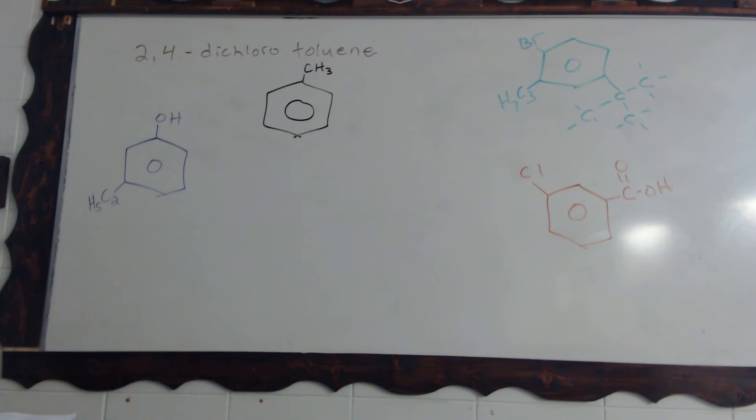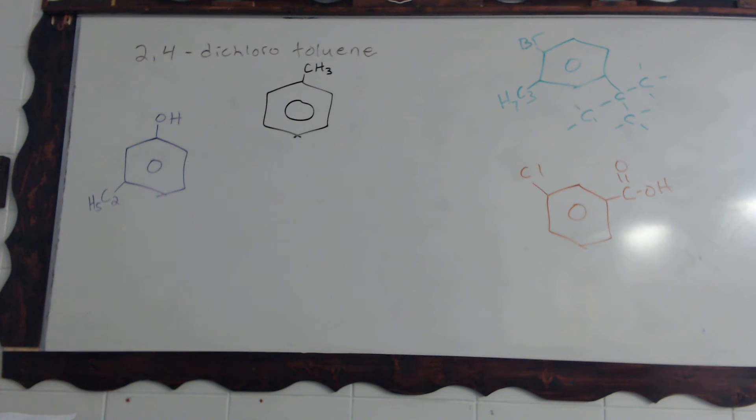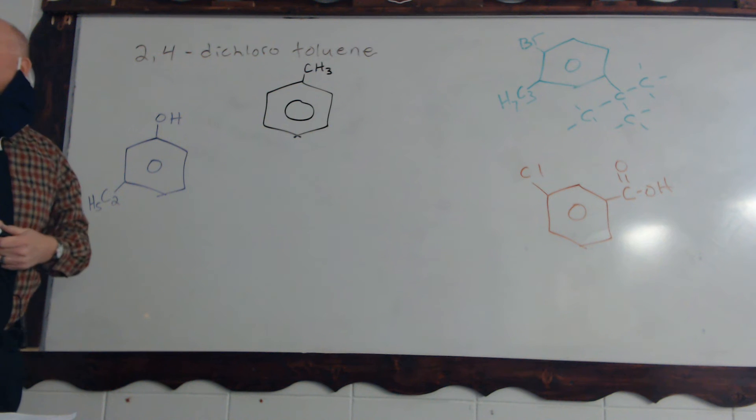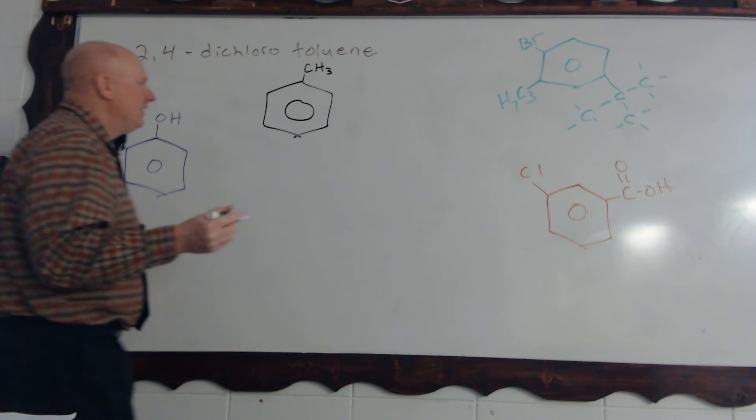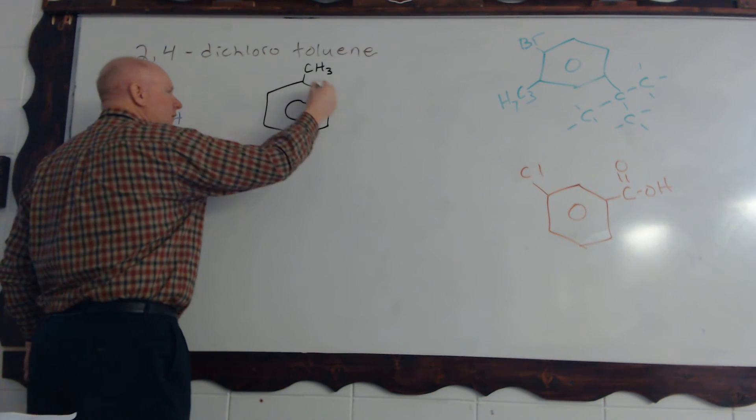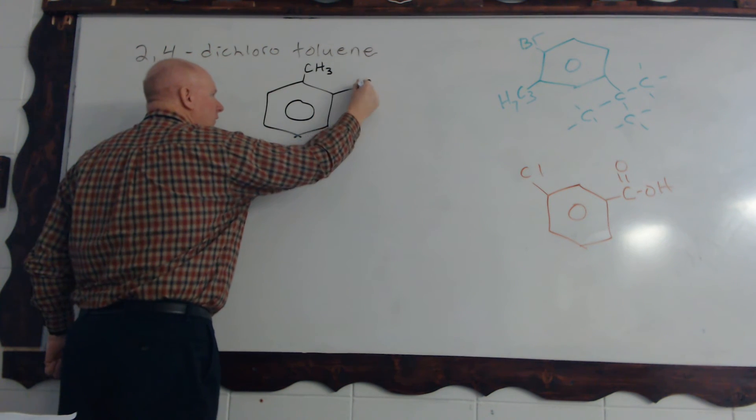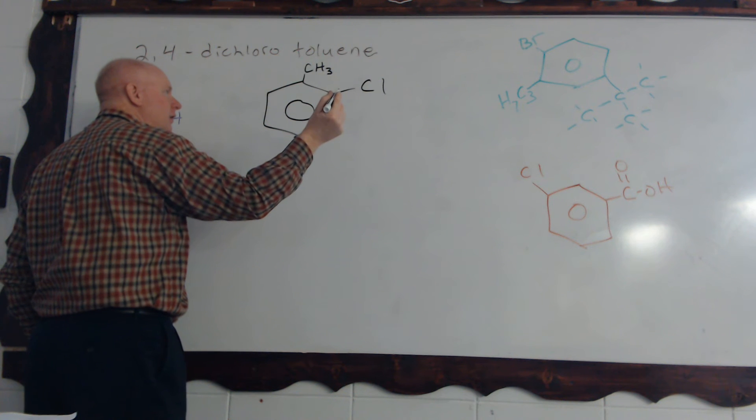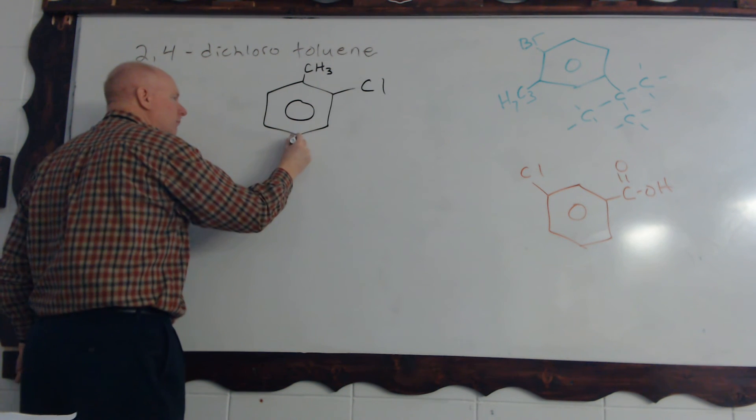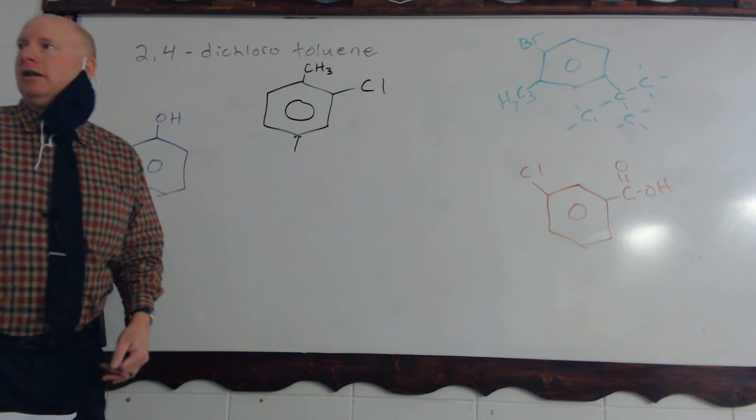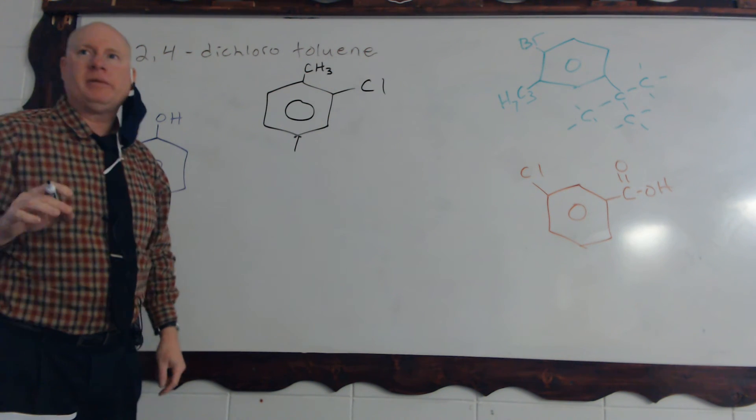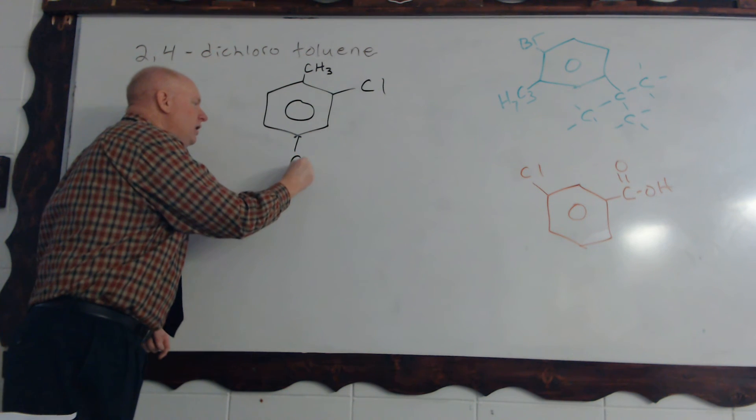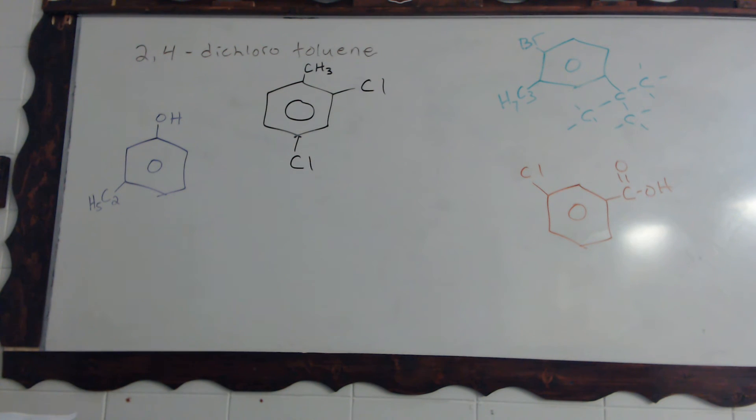Because if we don't use the term toluene, then these numbers got to change. Then you'd have 1,3-dichloro and then wherever you'd want to call this methyl group. But when you call it the common name, that's automatically saying that is carbon number one. Just like these two also follow that same pattern. Now we've got our one established with toluene. So where do these chlorine groups go then? Two away from this one, and right across from it. Yep and yep.